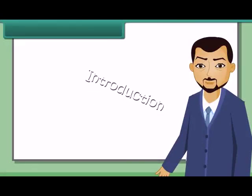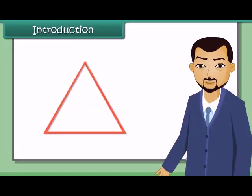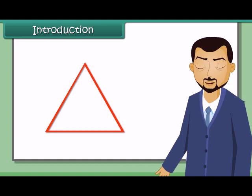We have seen that a triangle has six parts: three sides and three angles. But to construct a triangle, you need to know only three parts. So we can construct a triangle using the SAS, ASA, SSS, and RHS axioms.